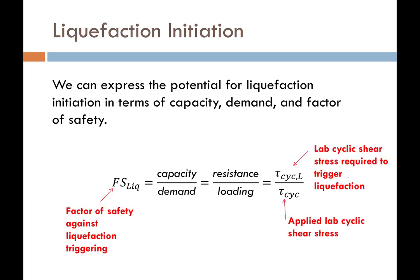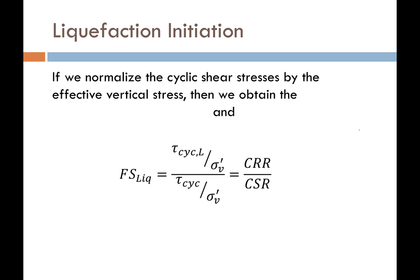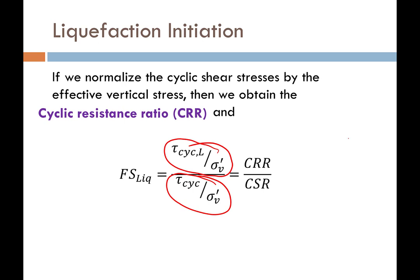If we normalize those shear stresses by the effective stresses — or confining stresses — in the soil, these terms become unitless ratios of stress. We've given them names: the cyclic resistance ratio, or CRR, represents the resistance of the soil to liquefaction; and the cyclic stress ratio, or CSR, quantifies the seismic loading from a particular earthquake. The ratio of CRR divided by CSR gives us the factor of safety.